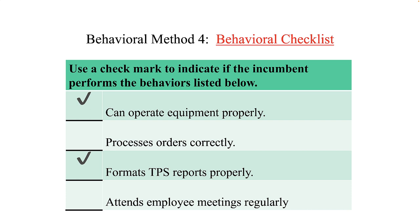The behavioral checklist is simply a list in which the rater checks those statements they believe are examples of the employee's performance — it is basically a yes-no checklist. As with some other methods, it does not rate the degree of quality of the behavior. But like the BOS, it is easy to use and very little training of the rater is required. The final score for the employee is just the sum of the check marks, and employees can then be compared based upon their sum scores.